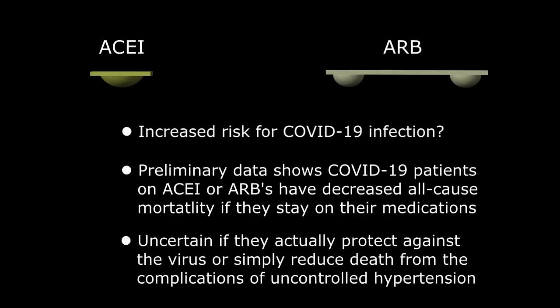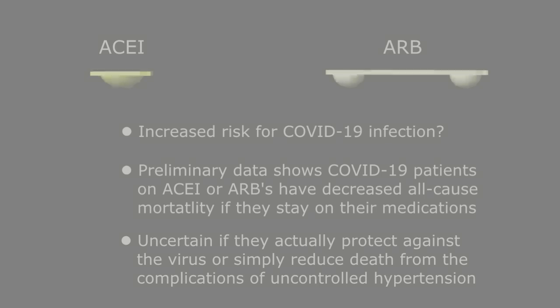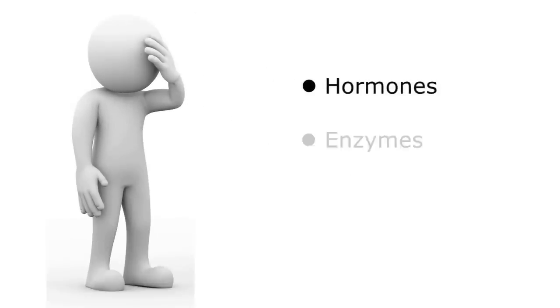However, preliminary data has shown just the opposite. COVID-19 patients on angiotensin-converting enzyme inhibitors or angiotensin receptor blockers do much better, with decreased all-cause mortality if they stay on their blood pressure medications during their infection. Whether this is due to lessening the impact of the infection itself or simply preventing death from the complications of hypertension is currently not clear and more research is needed. There is a lot of information here, and it can be a little confusing because of the similar terminology used for the various hormones, enzymes, and medications.